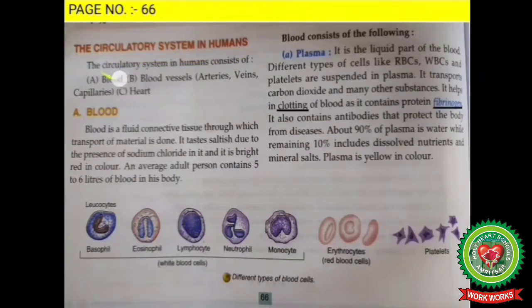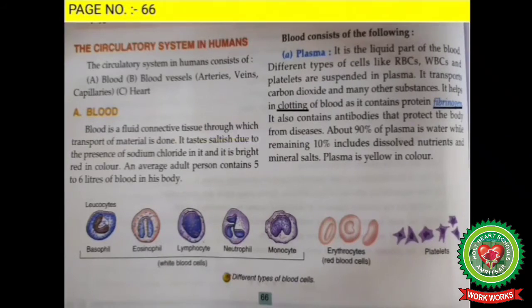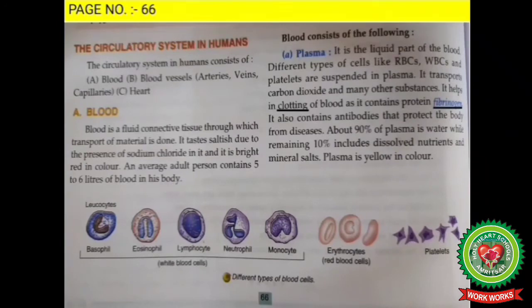Students, kindly open page number 66. Blood is a fluid connective tissue through which transport of material is done. It tastes saltish due to the presence of sodium chloride in it, and it is bright red in color due to the presence of hemoglobin, which is a red color pigment. An average adult person contains five to six liters of blood in their body.